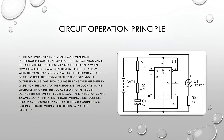When power is applied, the C1 capacitor charges through R1 and R2. When the capacitor's voltage reaches the threshold voltage of the 555 timer, the internal circuit is triggered, and the output signal becomes high.